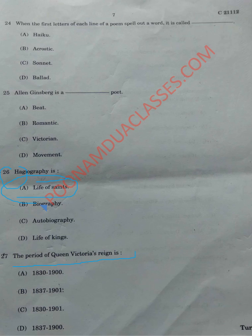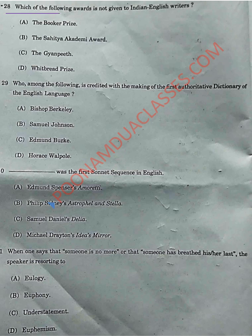Question 27: the Victorian period, which almost each one of us knows about, was from 1837 to 1901, named after Queen Victoria who reigned during this period. Question 28 asks which award is NOT given to Indian English writers. The answer is the Whitbread Prize. The Whitbread Prize was taken over by the Costa Award after 2005. Costa Book Awards are given to books by authors based in the UK and Ireland, and were known as Whitbread Book Awards until 2005, after which Costa Coffee took over.